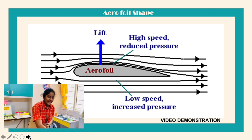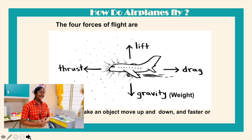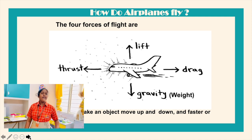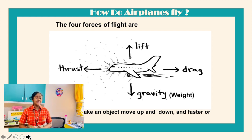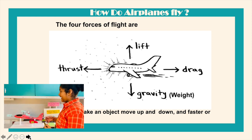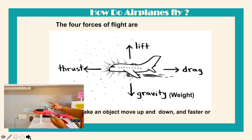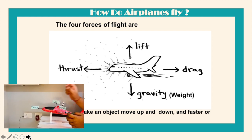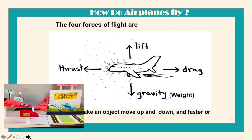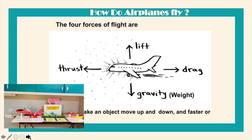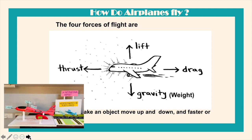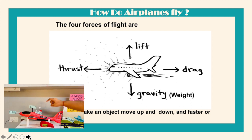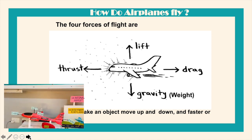Now let's know how do airplanes fly? There are four forces of flight: lift, weight or gravity, thrust, and drag. These forces make an object move up and down, faster and slower.